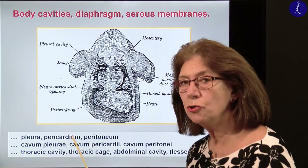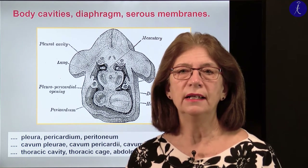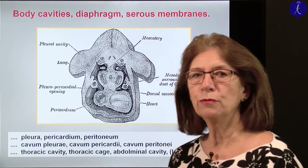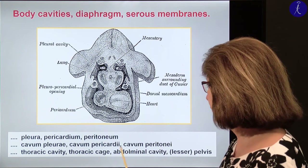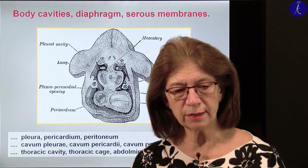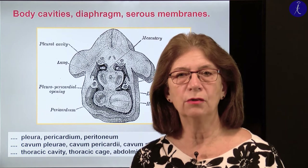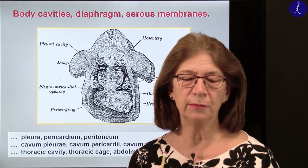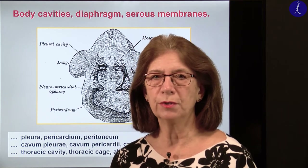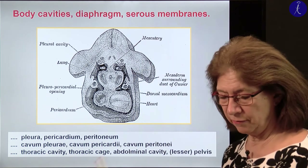The thoracic cage is the actual territory bordered by the ribs, the sternum, and the vertebral column. This thoracic cage also partially gives the wall of the abdominal cavity, especially in the higher regions. For example, the liver usually doesn't hang out from under the ribs, so the liver territory of the abdominal cavity is also bordered by the ribs. On the other side we have the fundus of the stomach and the spleen. So please be aware of these cavities.